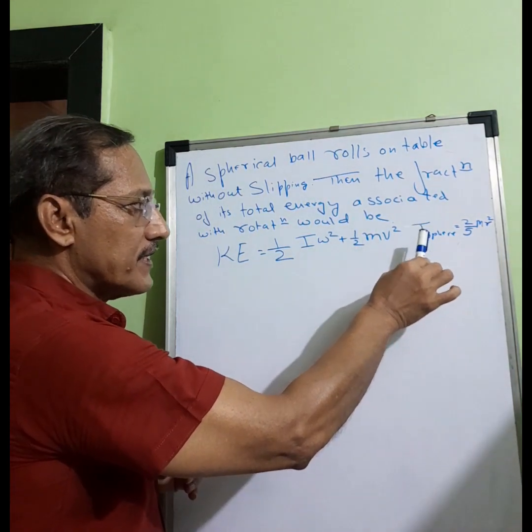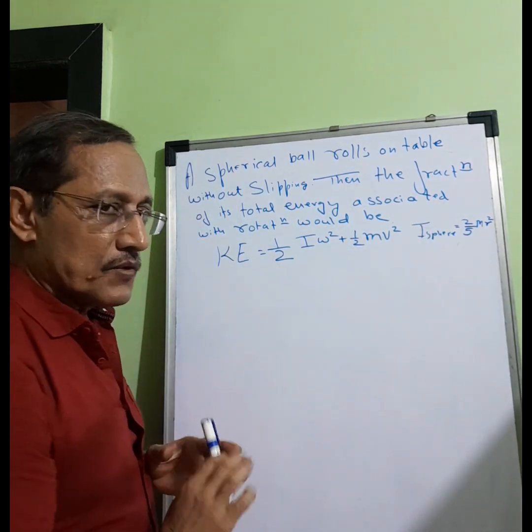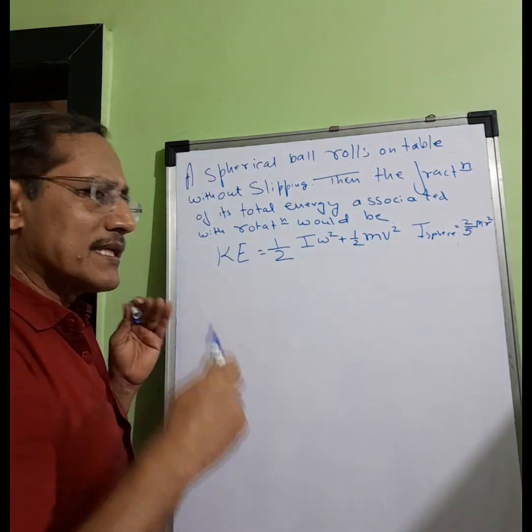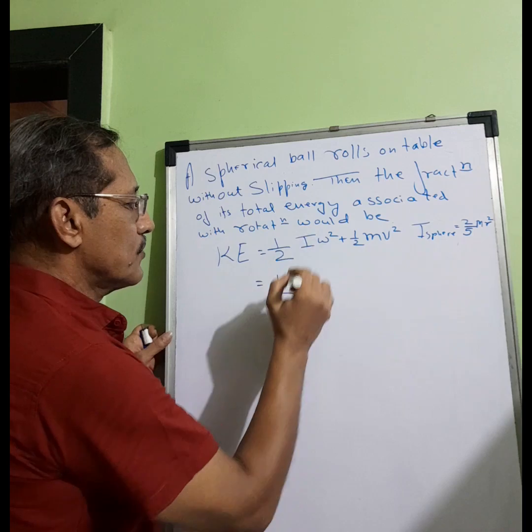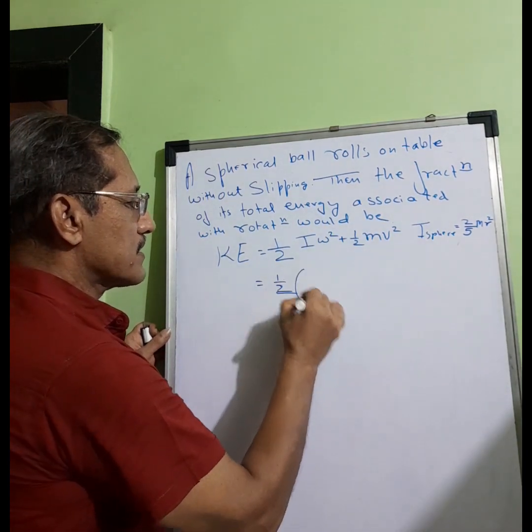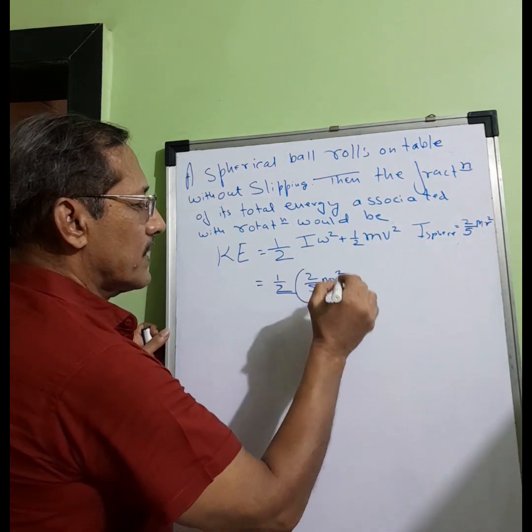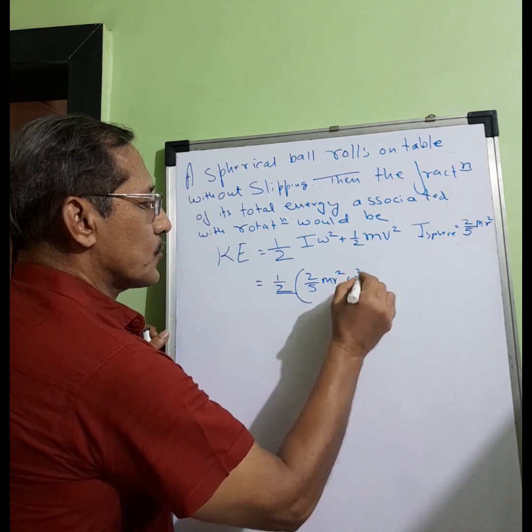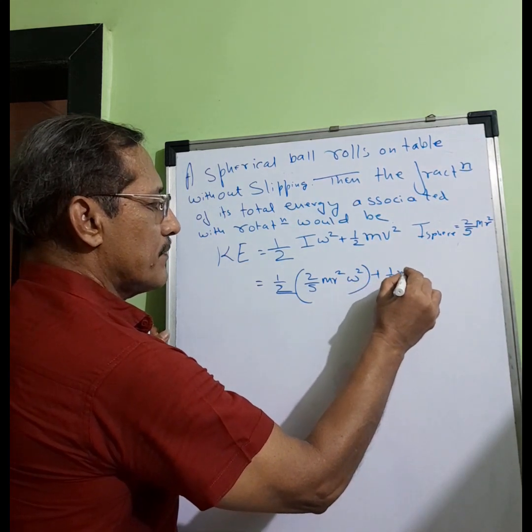Moment of inertia of a sphere is 2/5 mr². So let's get into it. What we do is first of all, we substitute. Instead of I, we can directly substitute 2/5 mr² and omega squared, done. Plus 1/2 mv².